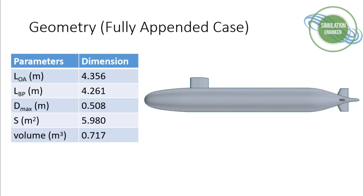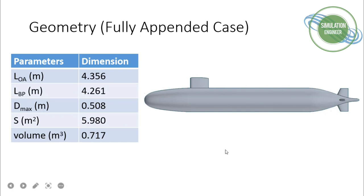For our fully appended test case, these are the essential geometry parameters. It's a fully axisymmetric hull and a fully appended test case, so we have the sailplane, the forward hydroplane, and the rudder on the aft side. The overall length is about 4.356 meters, then we have the length between perpendiculars, the maximum diameter of the hull, the wetted surface area, and the volume.